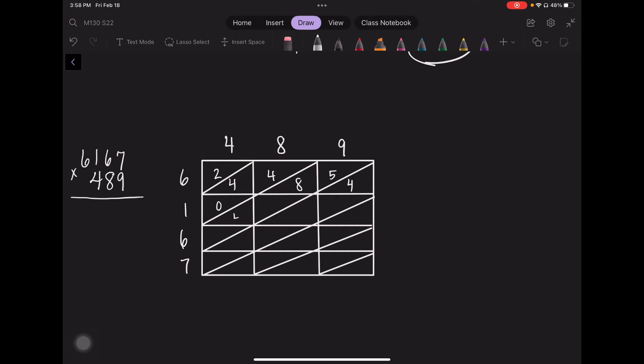4 times 1 is 4. 8 times 1 is 8. 9 times 1 is 9. 4 times 6 is 24. 8 times 6 is 48. 9 times 6 is 54. 4 times 7 is 28. 8 times 7 is 56. And 9 times 7 is 63.